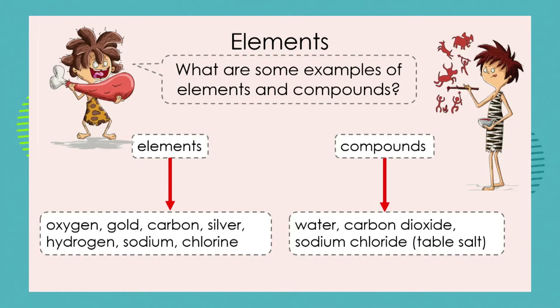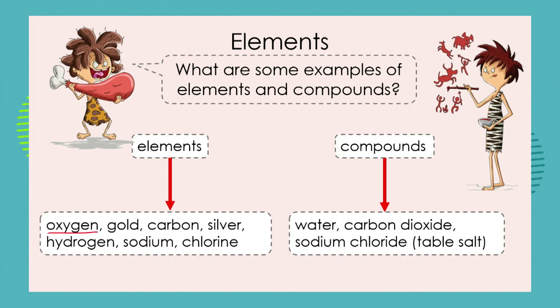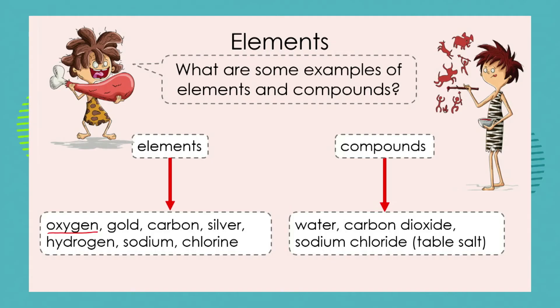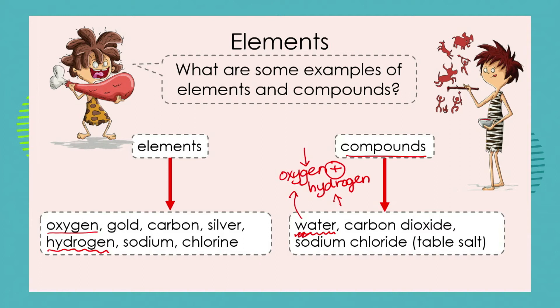Some examples of elements are oxygen. Pure oxygen only consists of oxygen — nothing mixed with it, nothing chemically combined with it. However, if we look at water, we know that water is a chemical compound made up of oxygen and another substance called hydrogen. Hydrogen is an element itself, but when we chemically join oxygen and hydrogen together, that new substance is a compound called water. Pure gold is an element.